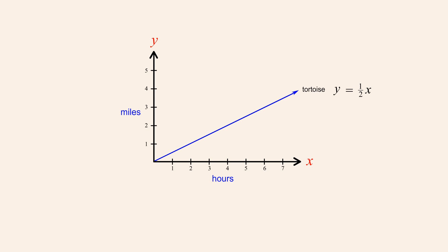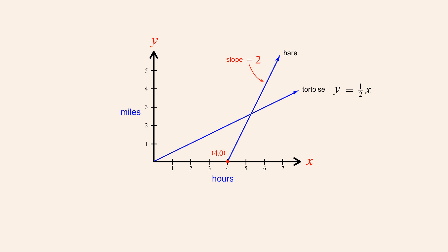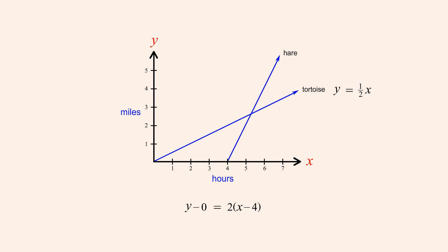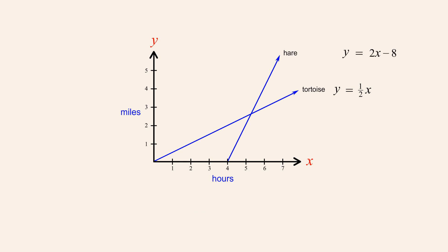Now that we have the equation for the tortoise's graph, we need to derive the equation for the hare. Since the hare is traveling at a constant speed of two miles per hour, the slope of his graph is two. We don't know the line's y-intercept, but we do know that the line passes through the point (4, 0). So we can use the point-slope form to write the equation for this line. Filling in the values, we replace x-one with four, y-one with zero, and m with the slope two. We then simplify by eliminating the zero and distributing the two to the terms in parentheses. Multiplying two times four to get eight, the equation for this line is y equals two x minus eight.